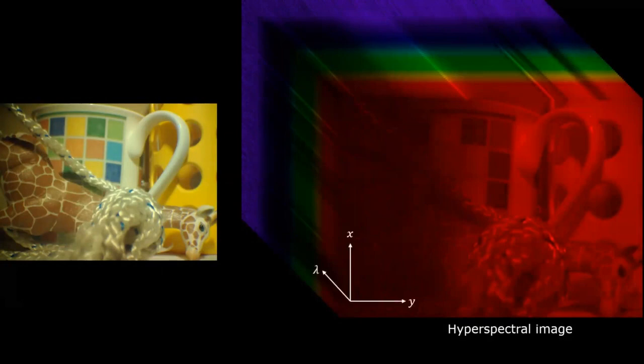While the applications of hyperspectral images are plenty, scanning the whole hyperspectral image is a daunting task as it needs to be done one spectral band at a time or one row of the image at a time. How do we capture hyperspectral images rapidly without compromising on spatial or spectral resolution?